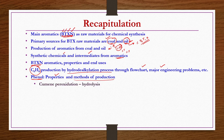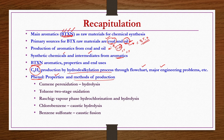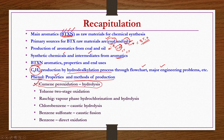The six competitive processes are: cumene peroxide hydrolysis process, toluene two-stage oxidation process, Rashic vapor phase hydrochlorination and hydrolysis process, chlorobenzene caustic hydrolysis process, benzene sulfonate caustic fusion process, and benzene direct oxidation process. Out of these, the cumene peroxide process we have already seen in detail. Now we are going to discuss the production of phenol by toluene two-stage oxidation, and then the remaining processes as well.